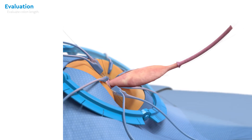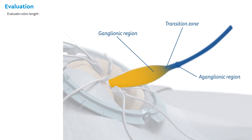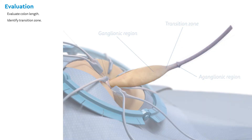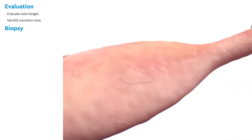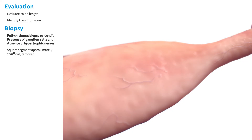The transition zone and ganglionic colon should now be apparent. Evaluate the colon length and identify the transition zone before proceeding. A full thickness biopsy is made to positively identify the presence of ganglion cells and the absence of hypertrophic nerves. A square segment, approximately one centimeter square, is cut and removed, and the biopsy region is closed.